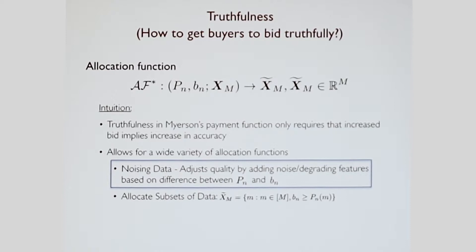Now I haven't talked about what the allocation function is. The truthfulness in Myerson's payment function says that all that requires is that the increase in bid implies an increase in accuracy. This allows for a wide variety of allocation functions. For example, you could noise the data. You could adjust the quality by degrading the features by some Gaussian noise, Laplace noise, whatever it is. Or you could allocate some subset of features and maintain a different price for each feature. There are multiple different methods. I'm going to focus on the case of noising data.